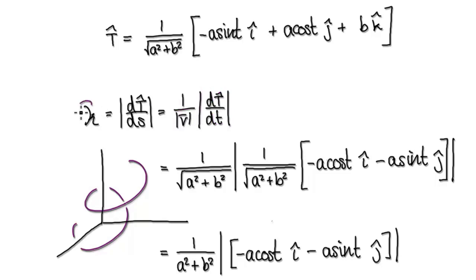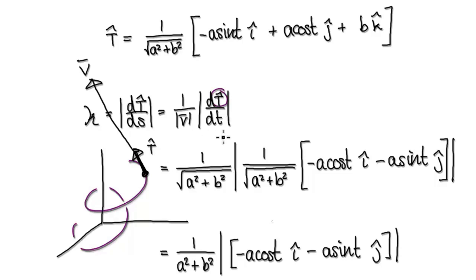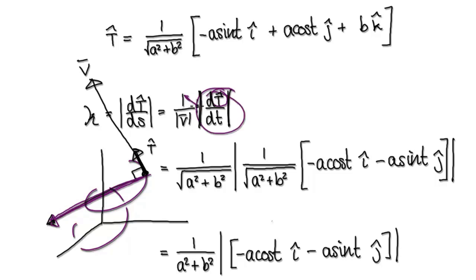When working out curvature, picture this: the particle is moving along any curve. Differentiate the position vector and that gives you the velocity vector. Divide by its magnitude and that gives you the unit tangent. If you differentiate the unit tangent with respect to time, it gives you a new vector. This new vector will be orthogonal — at 90 degrees — to the unit tangent. Working out the magnitude of this new vector and dividing by the magnitude of v gives you the curvature.